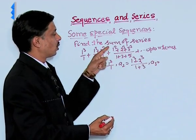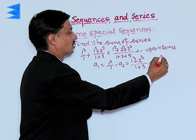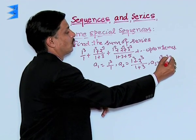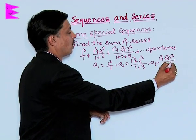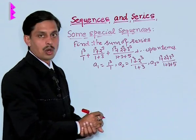Similarly, the third term you can observe is sum of cube of first three natural numbers upon sum of first three odd numbers.